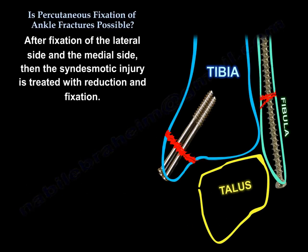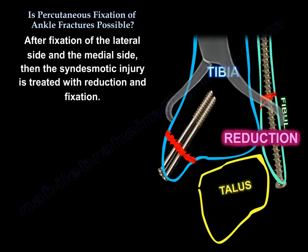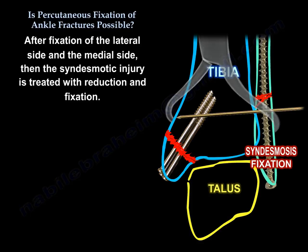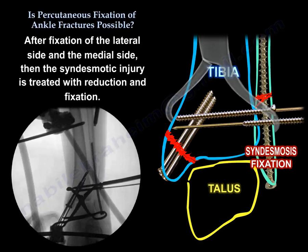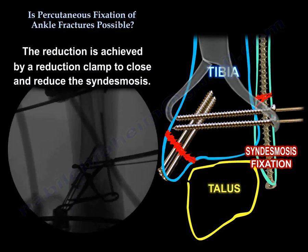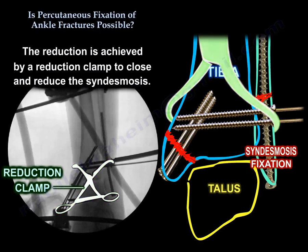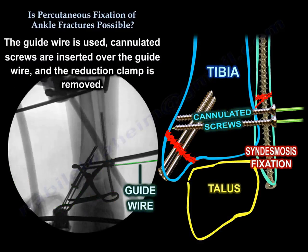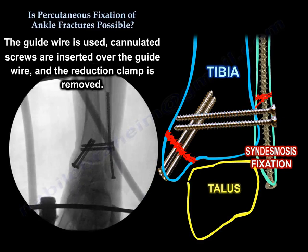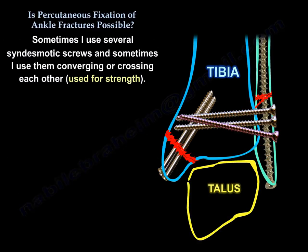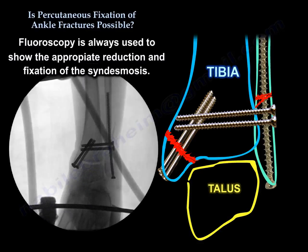After fixation of the lateral and medial sides, syndesmotic injuries are treated with reduction and fixation. Reduction is achieved using a reduction clamp, then a guide wire is placed and cannulated screws are inserted over it before removing the clamp. Sometimes I use several syndesmotic screws, converging or crossing each other for added strength. Fluoroscopy is always used to confirm appropriate reduction and fixation of the syndesmosis.